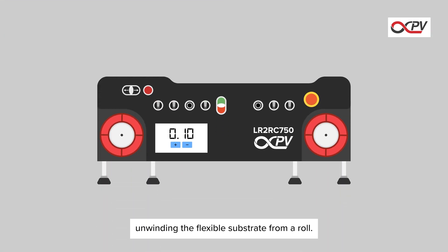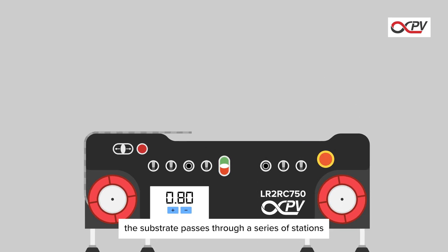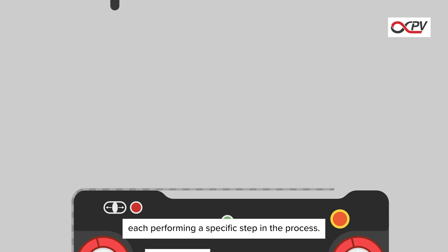The process starts by unwinding the flexible substrate from a roll. As it moves forward, the substrate passes through a series of stations, each performing a specific step in the process.